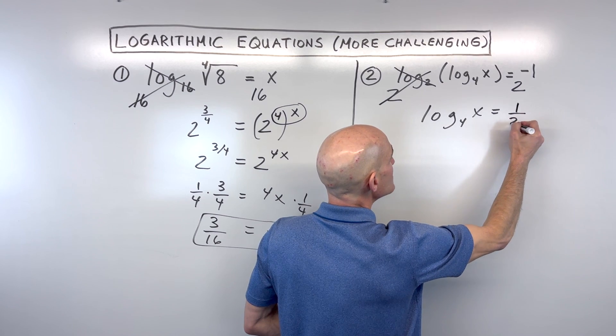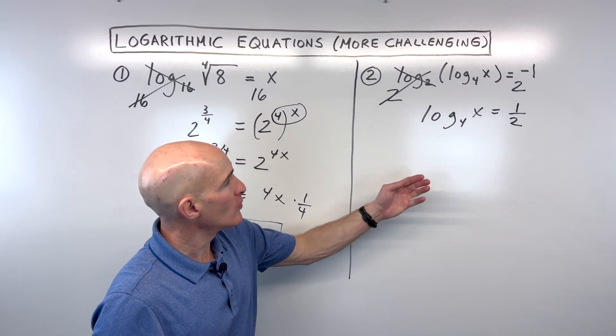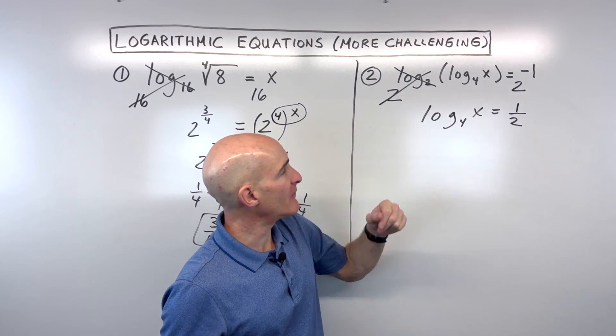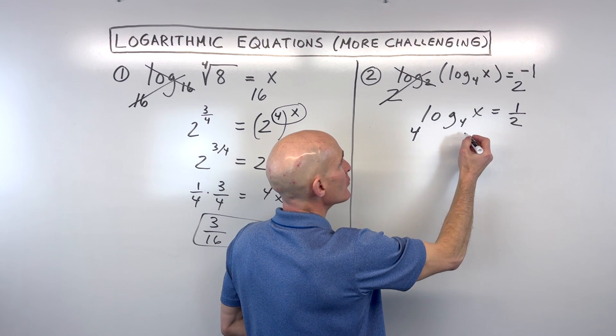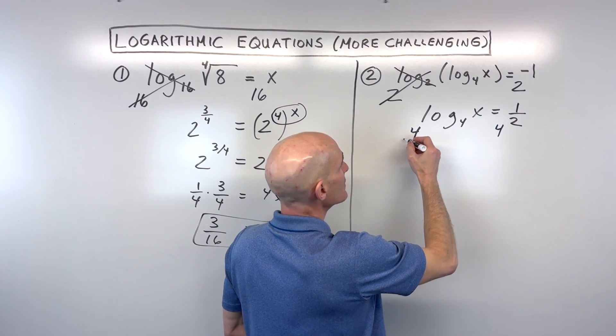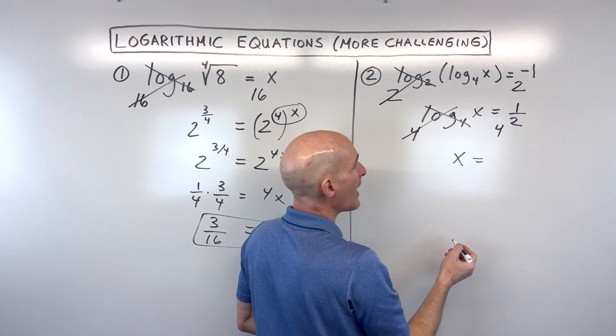And so you can see we're left with 2 to the negative 1, which remember, when you have a negative exponent, that tells us to take the reciprocal. So now we just have one log here, but again, we're still trying to get that variable by itself. Let's do this one more time. Let's exponentiate both sides using base 4. These are inverses. They undo one another. And we have x is equal to 4 to the 1 half power.